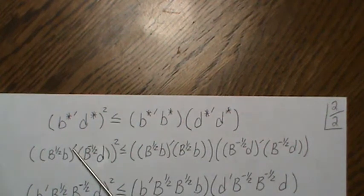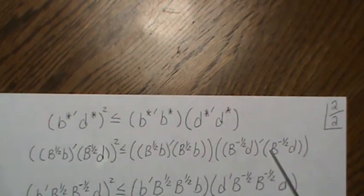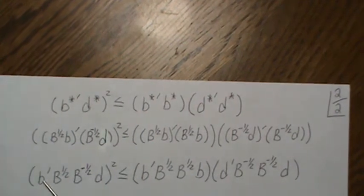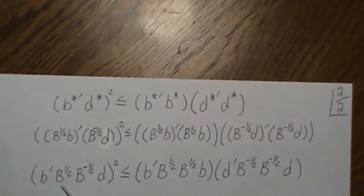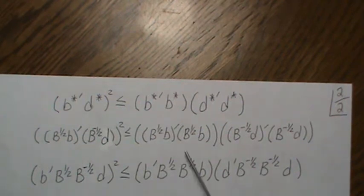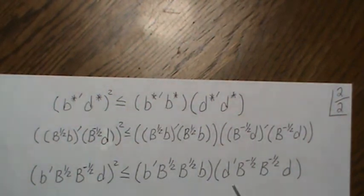Now, this transpose, we distribute, distribute, distribute, and we get this. So the B prime, and since B to the 1 half is symmetric, we get this. And the same way for each one of those.